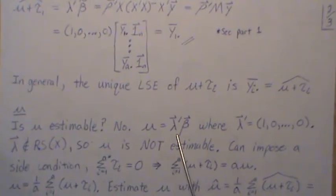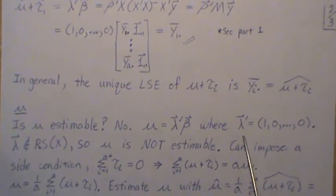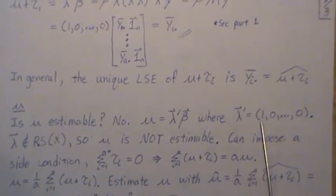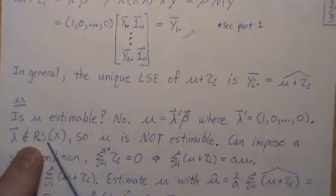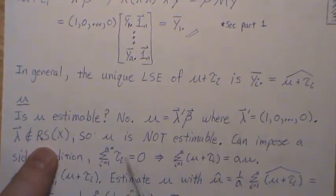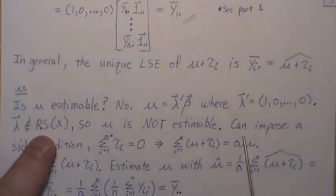μ equals λβ. The λ would have to be a 1 and the rest 0, so that way when it does this multiplication, it just picks off the μ. But λ is not in the row space. So μ is not estimable.